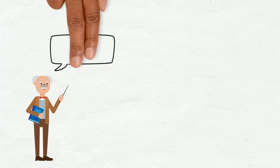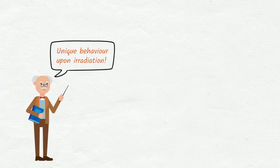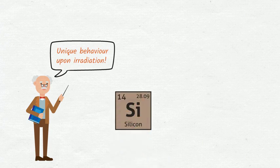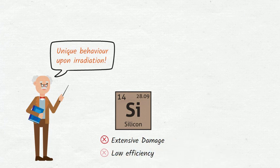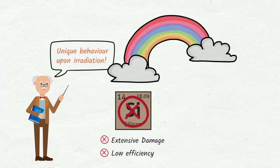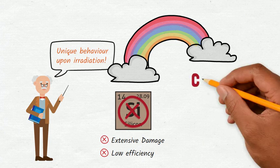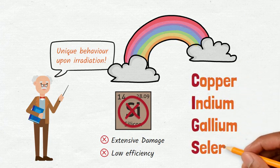One important remark to be made here is that each material responds in its own way when subjected to radiation. While the thick silicon layers used in typical solar cells tend to suffer extensive damage and have their efficiency heavily degraded, newer thin film approaches seem to resist these radiation events much better, such as the copper, indium, gallium, selenium compound.